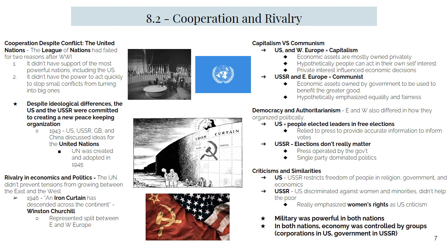In 1946, as Soviet control over Eastern Europe grew, Winston Churchill famously declared that an iron curtain had descended across the continent, representing a more permanent split and divide between the East and West. This divide was enforced by the ideological separation of the two sides — at the core of the conflict was the struggle between capitalism and communism.